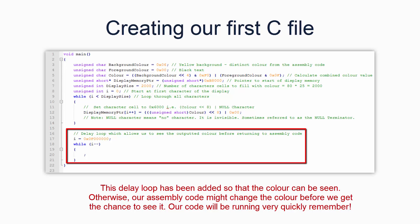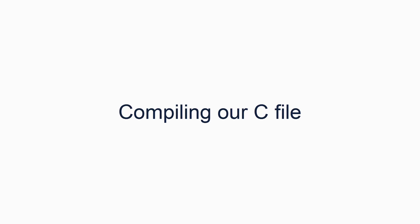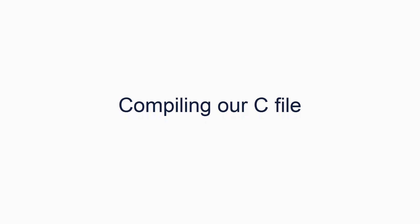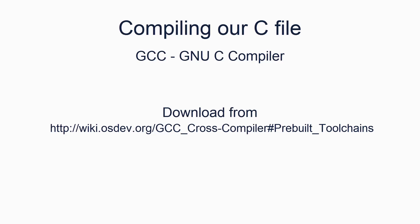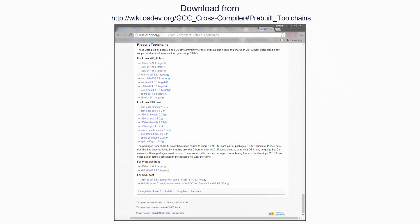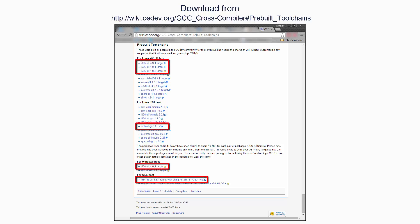Before we look at how we can call our C method from assembly code, let's compile our C into machine code so we have something the computer can work with. We will use a common C compiler known as GCC, the GNU C compiler. You can download the required version of GCC for Windows from the following link. These binaries are pre-compiled and kindly provided by osdev.org users. The version required is i686 ELF target, for whichever host you are running on. The version number is not particularly important for us.